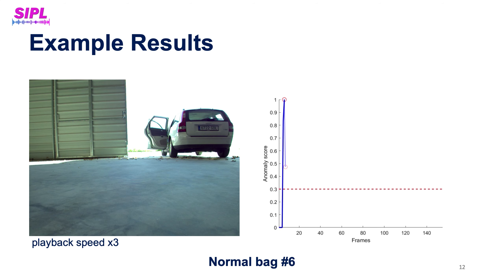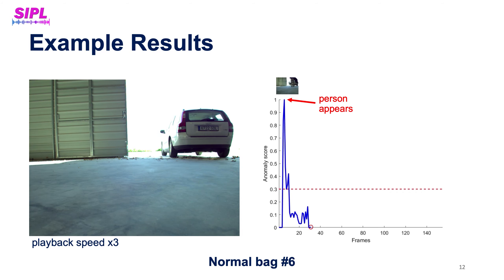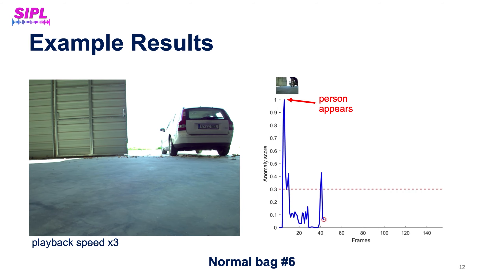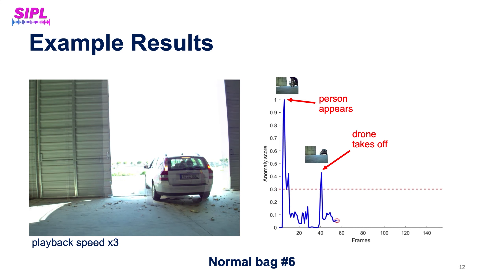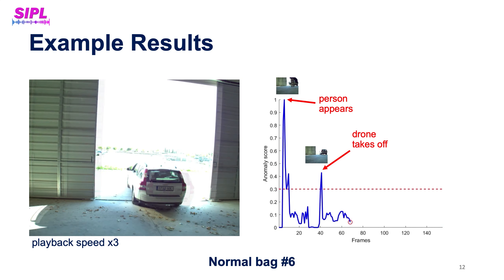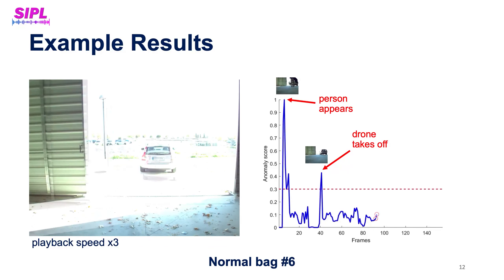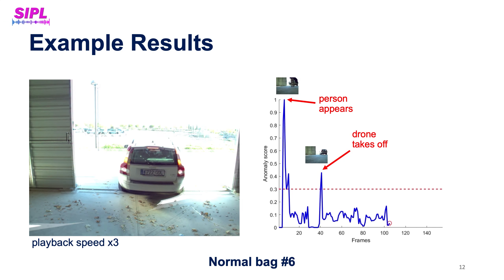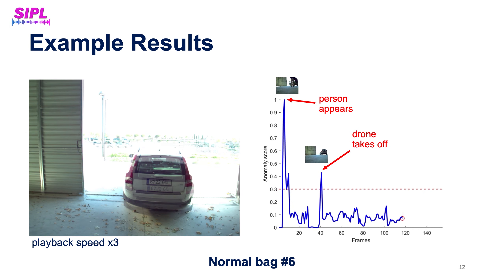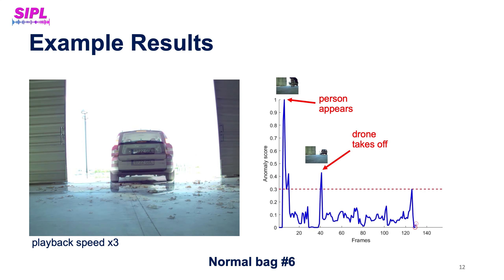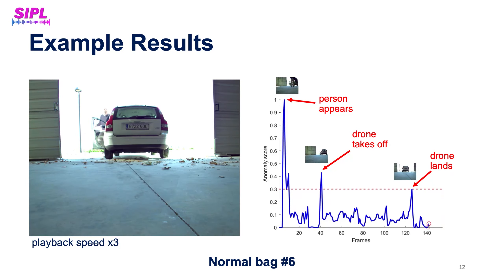Let's see some results. Here we see a video from a normal bag along with anomaly scores reported by our method. Although this bag is defined as normal, it has three events that can be considered abnormal: a person enters the scene from the right, the drone takes off, and the drone lands. The first event is reflected in the video, and the other two are reflected mainly in the IMU data. Nonetheless, our method correctly detects all three very different events.